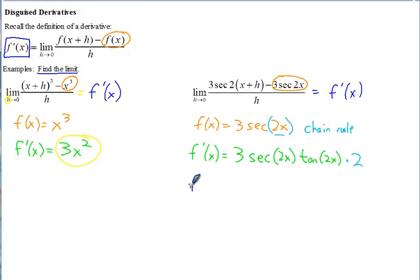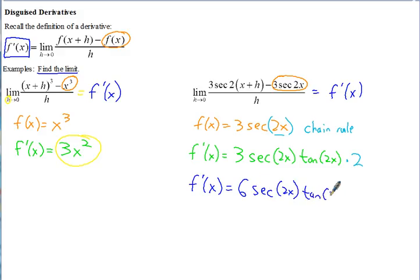Simplifying, we bring the 2 out front with the 3 to get 6, giving us 6 secant 2x tangent 2x. That's f prime of x, the derivative. And since this whole limit equals the derivative, this limit equals 6 secant 2x tangent 2x.